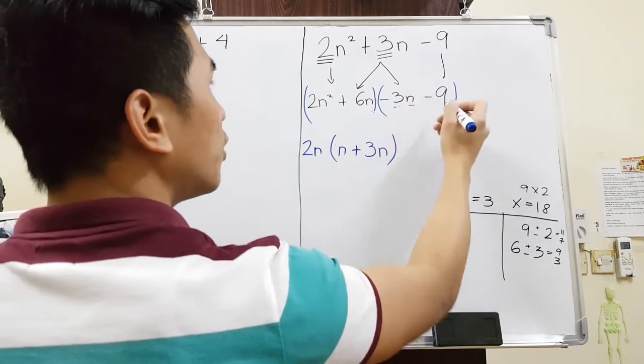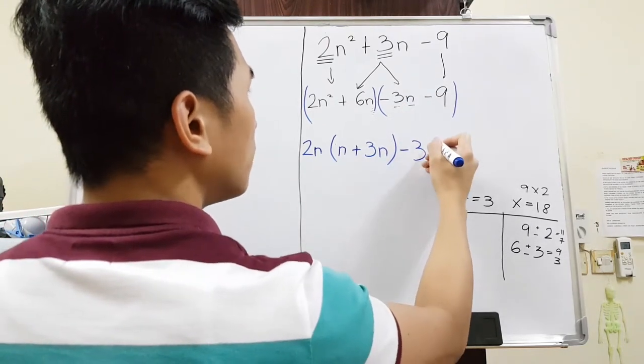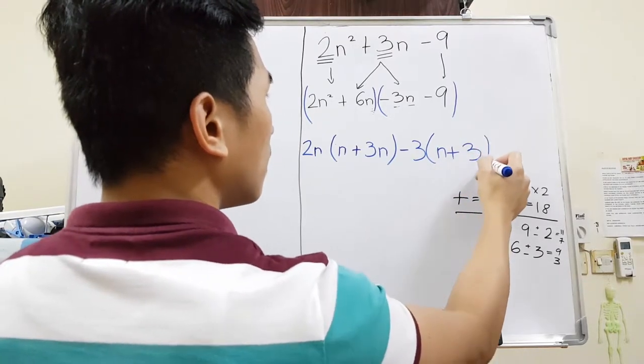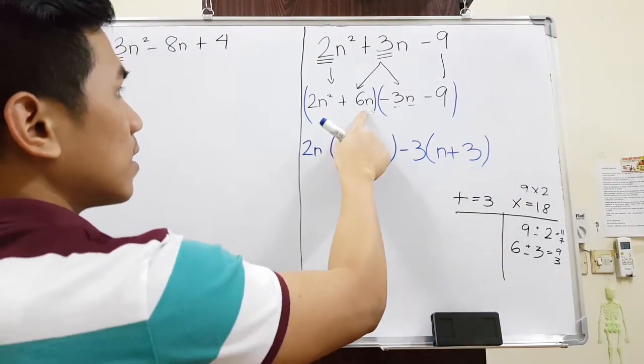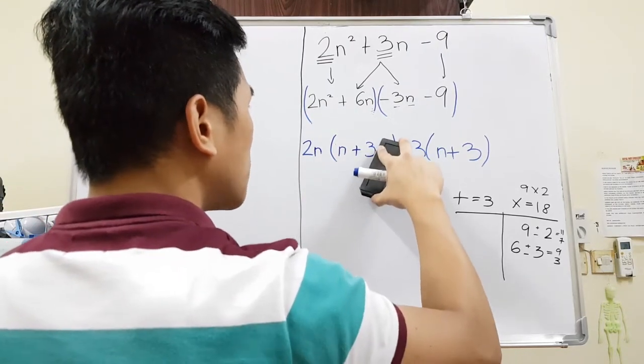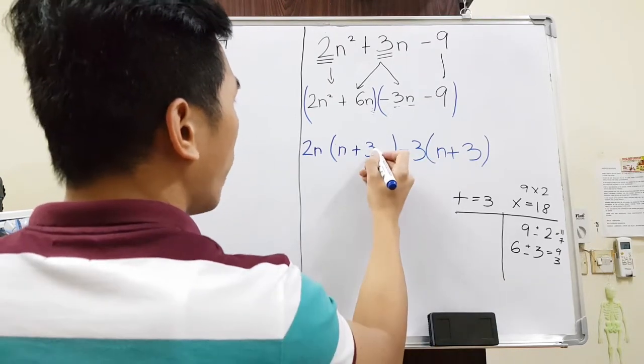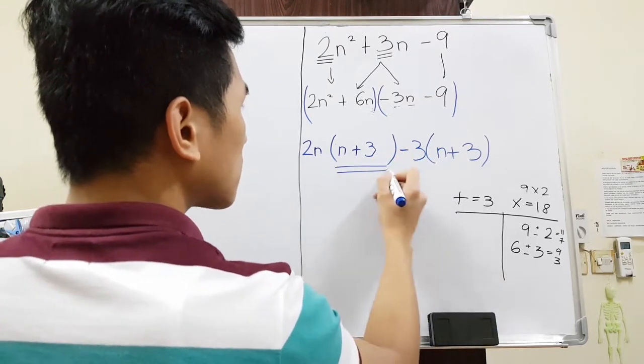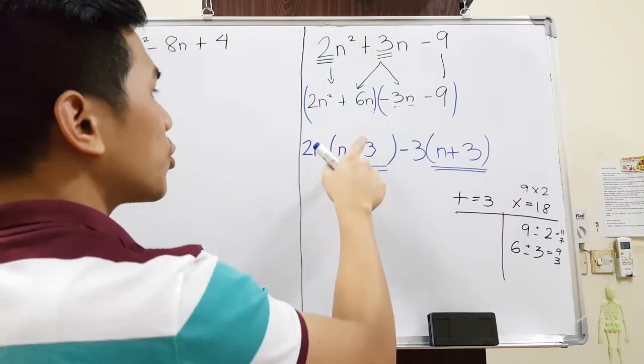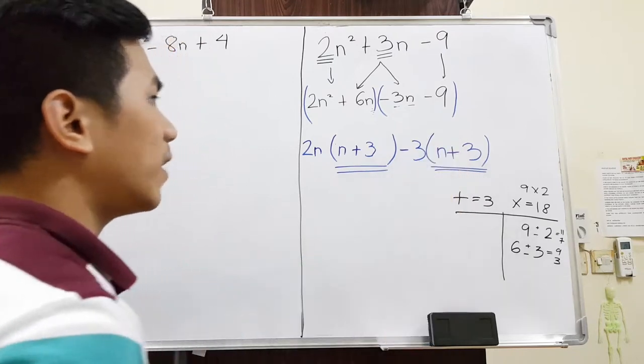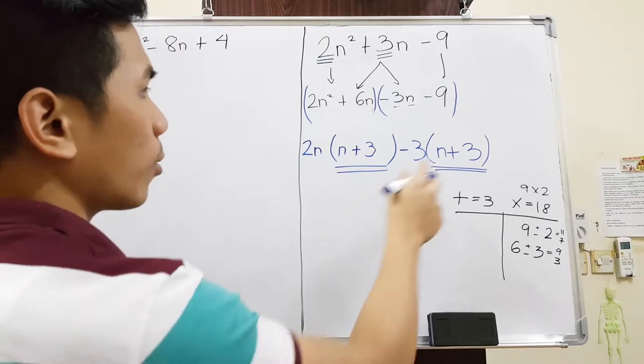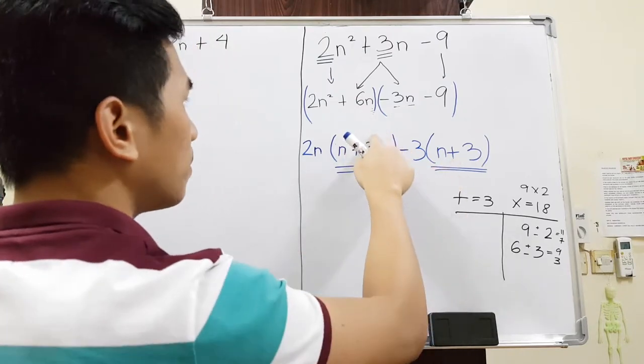And then here, what's the common factor? We can take negative 3 outside. And then n plus 3. Oh, I'm so sorry, guys. 6n divided by 2n over here is equivalent to 3. Now, as you can see, I already noticed that I made a mistake in here. Because I am expecting that this and this are the same. So you should also do that. You should check and make sure that this and that are equivalent to each other. Because the moment they are not equivalent, it means you are doing something wrong. I just fixed it.